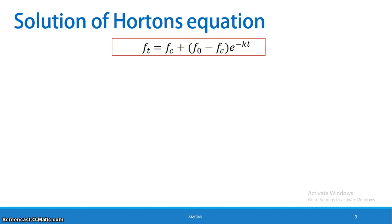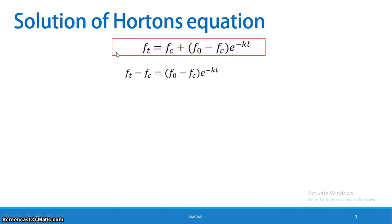Next is the solution of Horton's equation. We have to solve this mathematical formula by rearranging the terms on the left-hand side. Rearranging gives: Ft minus Fc equals F0 minus Fc, multiplied by e raised to minus Kt.